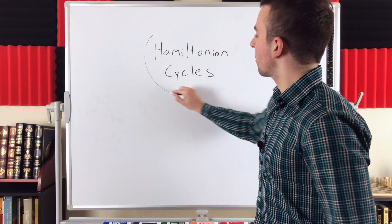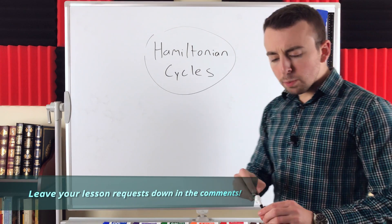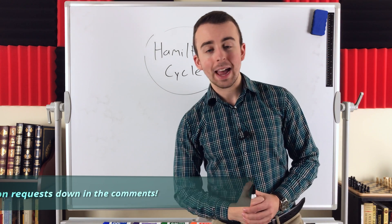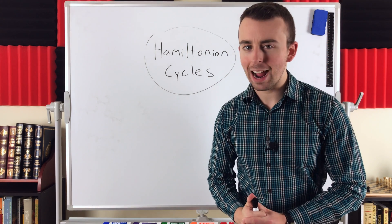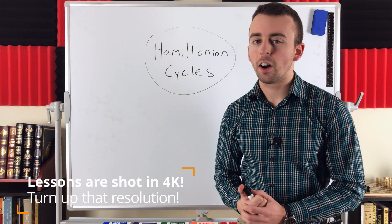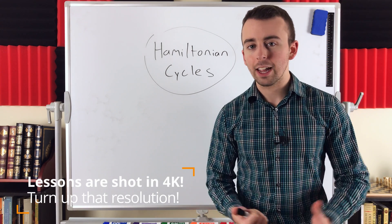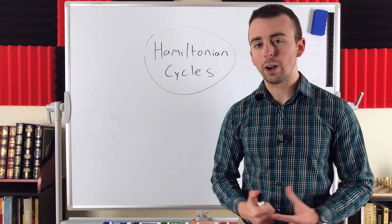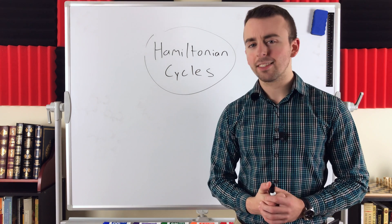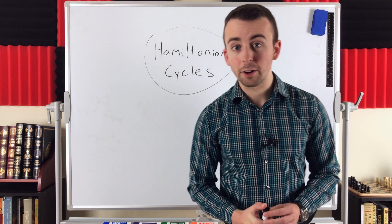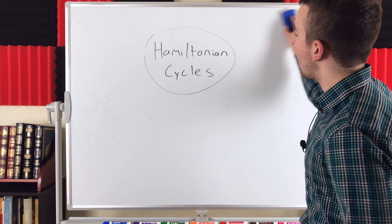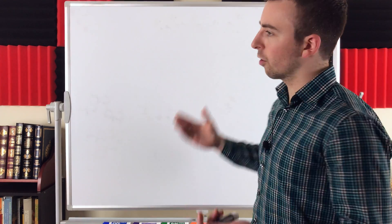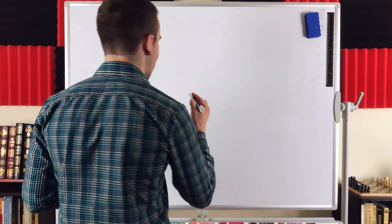What are Hamiltonian cycles in graph theory? That's what we'll be going over in today's Wrath of Math lesson. We'll also talk about Hamiltonian paths and Hamiltonian graphs. You might already be familiar with a similar concept of an Euler circuit, which is a circuit that contains every edge of a graph. A similar question you might ask is if a graph has a cycle that contains every vertex of the graph. Such a cycle is called a Hamiltonian cycle.